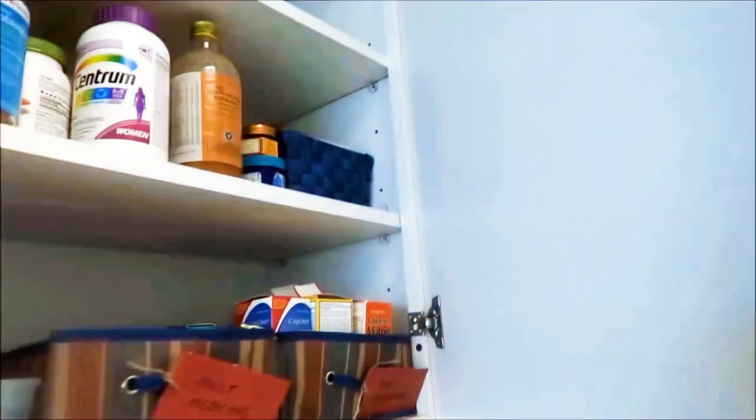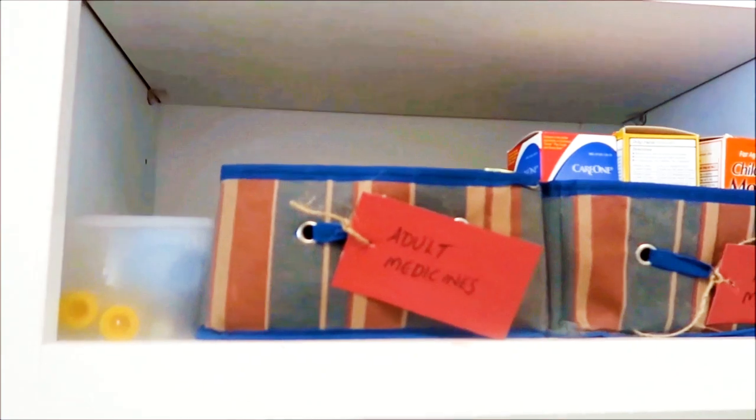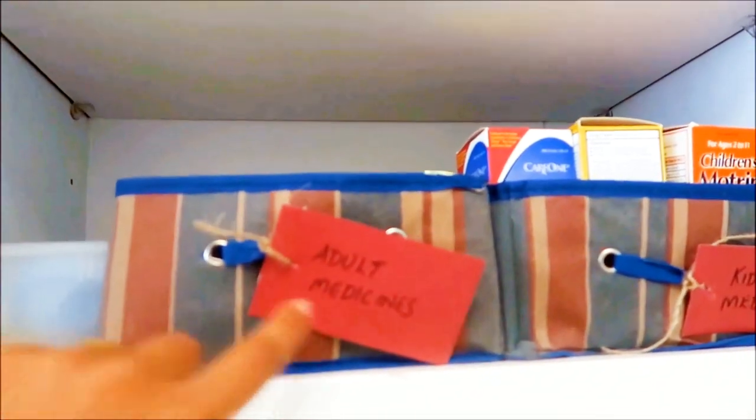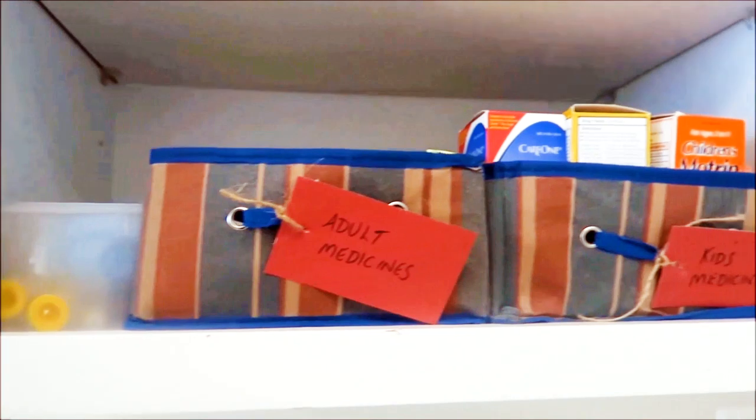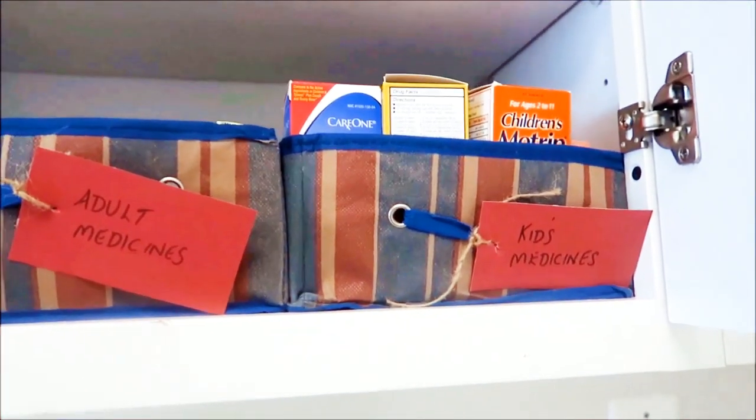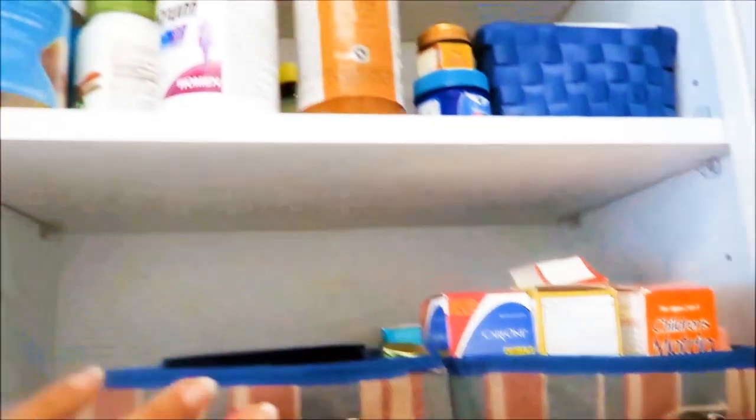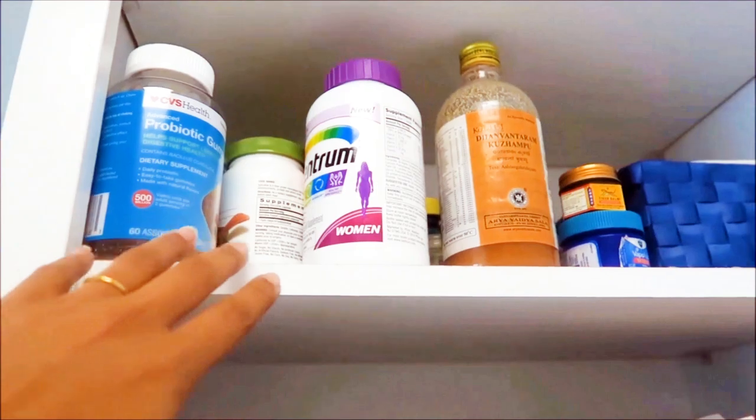In the last cupboard, it's kind of a medicine cabinet. I have used bins to label my kids' medicines and adult medicines separately. This row is mostly for medicines when you get sick, and over the top I have multivitamins, probiotics, and such supplements.